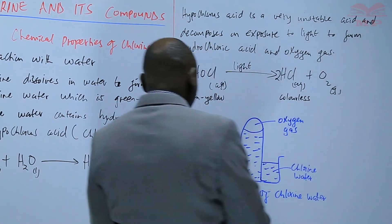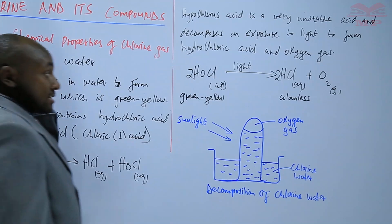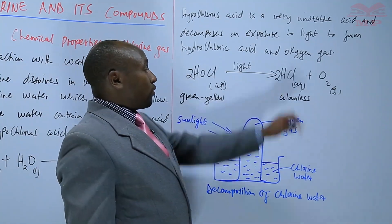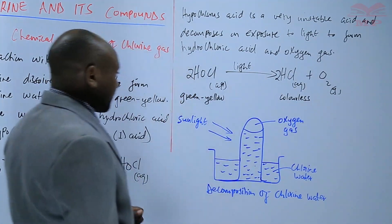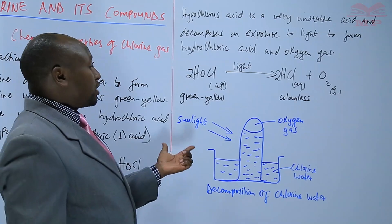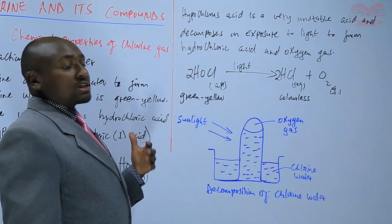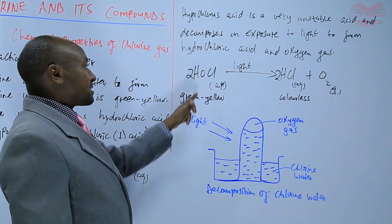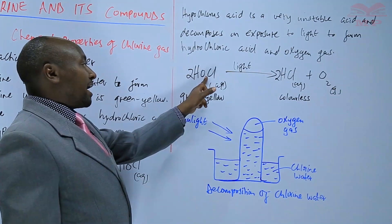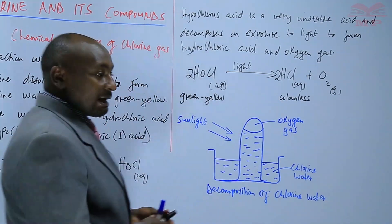Chlorine water is a combination of hydrochloric acid and hypochlorous acid. Once the hypochlorous acid is exposed to light, it decomposes to form hydrochloric acid and oxygen is released. The same decomposition would happen if chlorine water were heated — the oxygen atom would be lost, making the color change from green-yellow to colorless.